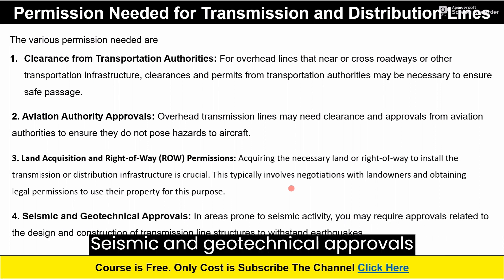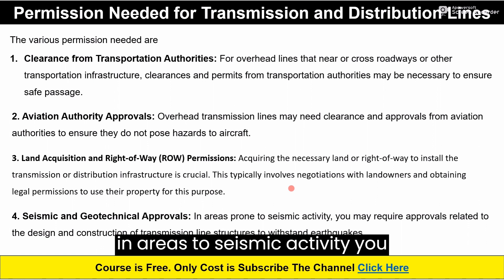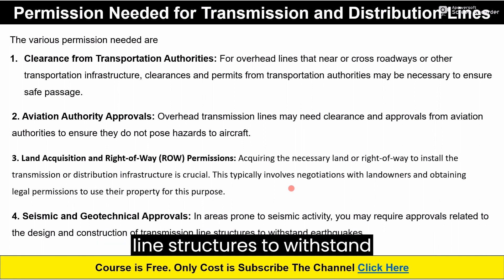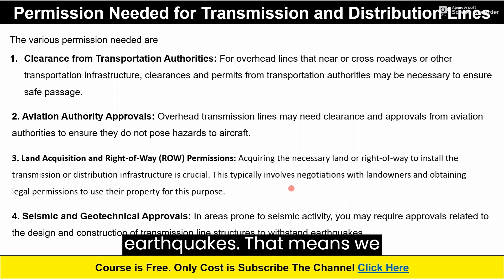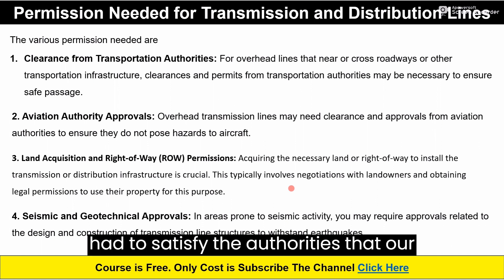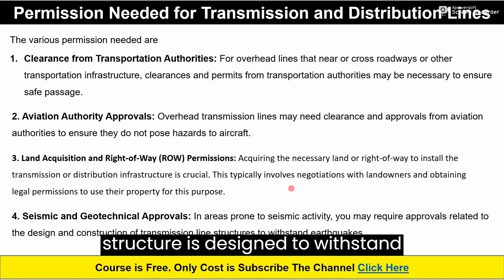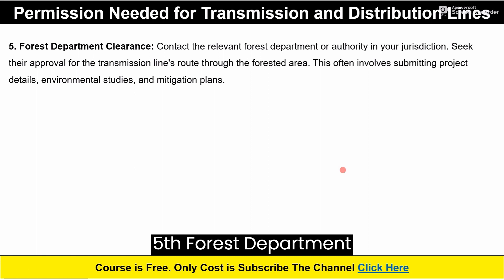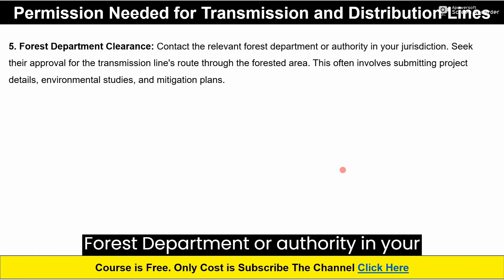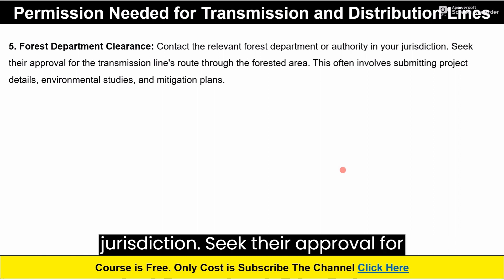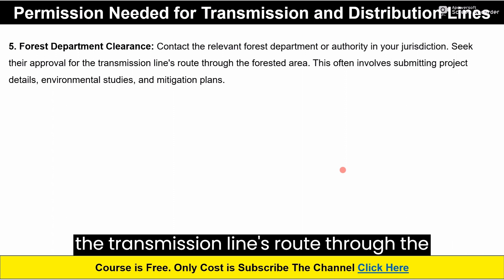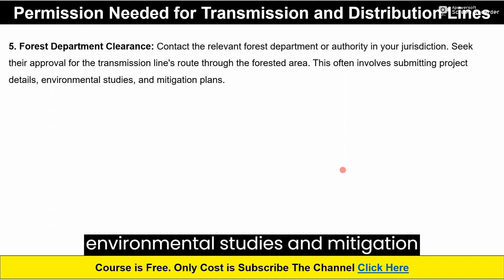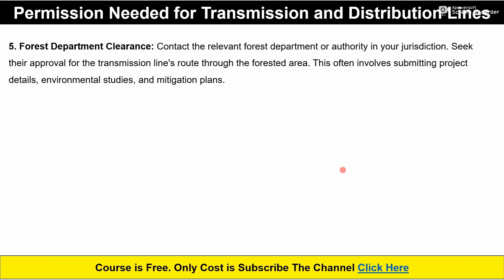Fourth, Seismic and Geotechnical Approval — in areas prone to seismic activity, you may require approval related to the design and construction of transmission line structures to withstand earthquakes. We have to satisfy the authorities that our structure is designed to withstand earthquakes. Fifth, Forest Department Clearance — contact the relevant forest department or authority in your jurisdiction and seek clearance and approval for the transmission line route through the forest area. This often involves submitting project details, environmental studies, and mitigation plans.